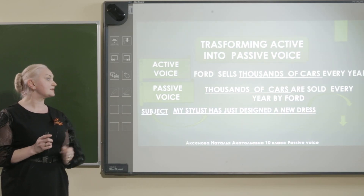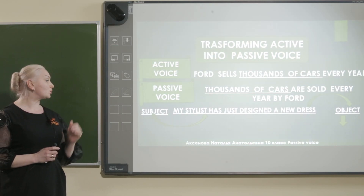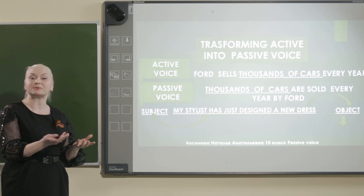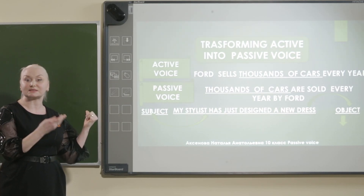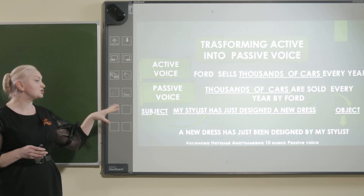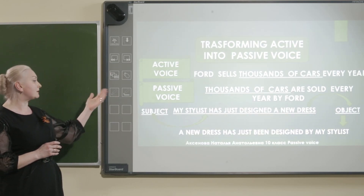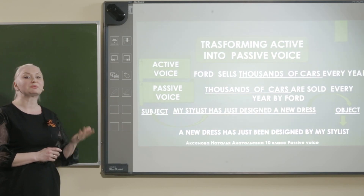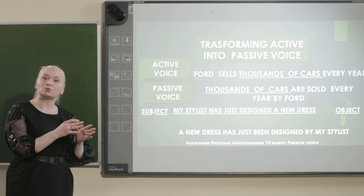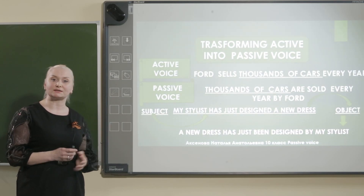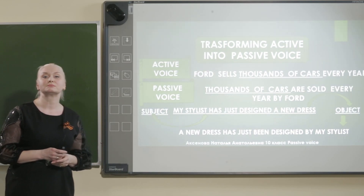My stylist has just designed a new dress — Мой стилист разработал новое платье. You can see my stylist is the subject. And a new dress — vice versa — a new dress is the object and stylist is the subject. But in passive: a new dress has just been designed by my stylist. Вы смотрите на последовательность: новое платье было разработано моим стилистом. Обратите внимание на временную форму — we must use the tense which is in the initial sentence. Мы должны использовать при преобразовании в страдательный залог время, которое показано в первоначальном предложении.